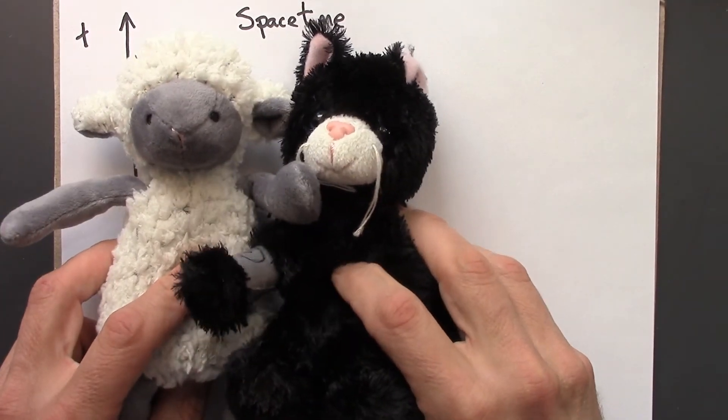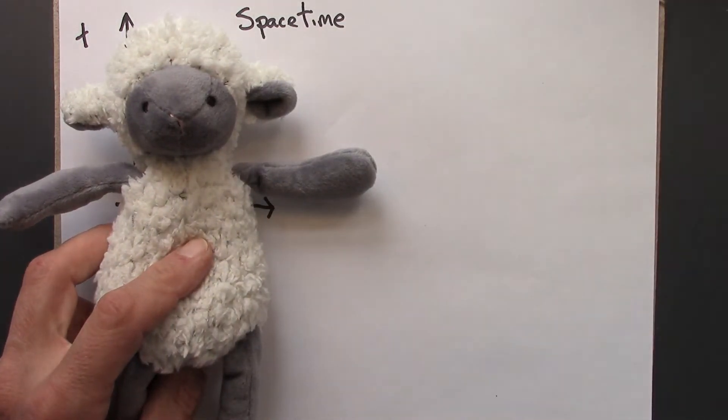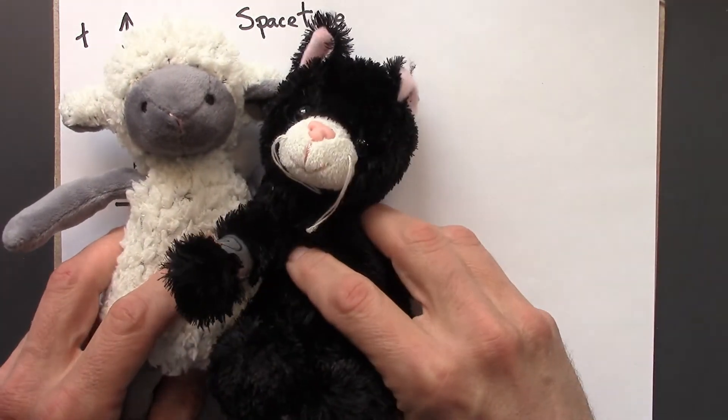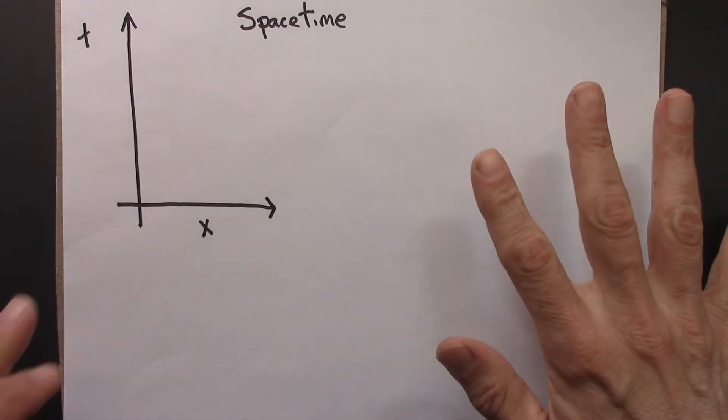Here's the situation: Anastasia and Beowulf start together. Beowulf goes off, and then comes back. Let's draw this scenario on a spacetime diagram.